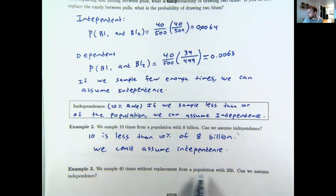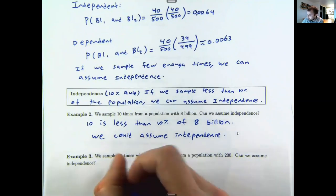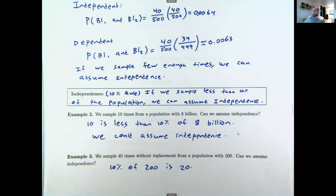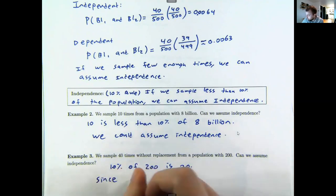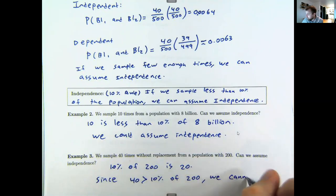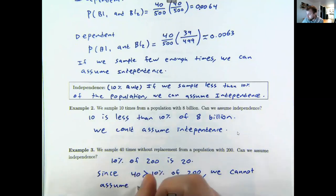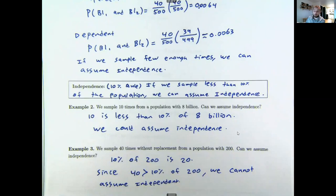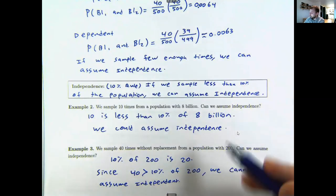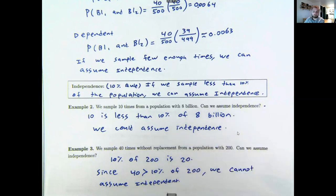Sampling 40 times without replacement from a population of 200: can we assume independence? Well, 10% of 200 is 20. If I'm sampling less than 20, I can assume independence. If I'm sampling 20 or more, I cannot. Since 40 is bigger than 10% of 200, we cannot assume independence. If I wanted to find the probability of, say, 40 blue things in a row, I would have to track changing probabilities using a giant tree.